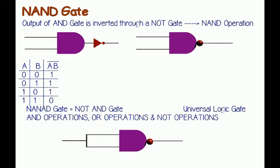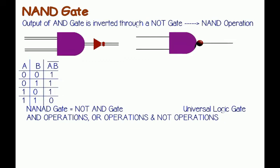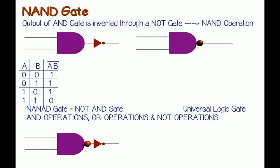Now we will try to realize an AND gate using a NAND gate. As mentioned earlier, a NAND gate is a NOT gate followed by an AND gate. So if we can cancel the effect of the NOT gate in a NAND gate, it will become an AND gate. Hence, a NOT gate followed by a NAND gate realizes an AND gate. In this case, we use the NOT gate which is realized from the NAND gate, and the logic circuit is shown here.